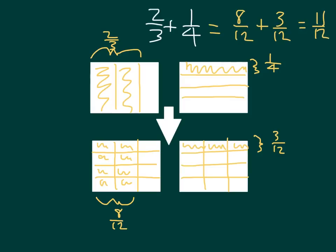As we see right here, after we wrote those equivalent fractions for 2 thirds and 1 fourth, we count 11 parts out of 12. So that is 11 twelfths. The whole equation, again, is 2 thirds plus 1 fourth equaling 11 twelfths.